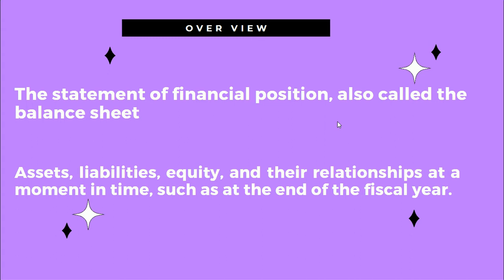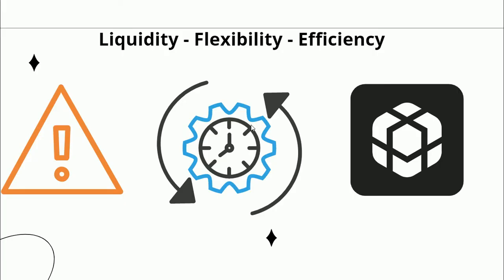The Balance Sheet reports the amount of assets — that is, asset values — liabilities, which is debt, and equity, which is the net worth, at a particular point in time, such as the end of the year. The Statement of Financial Position shows liquidity, flexibility, efficiency, and capital structure.